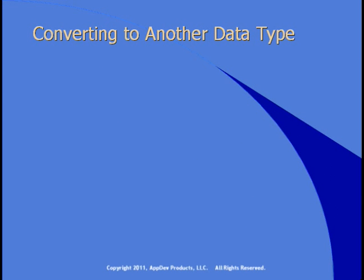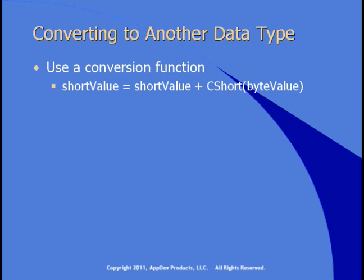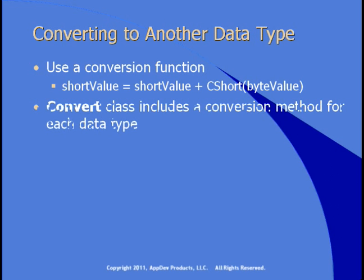Let's look at three ways that you can convert one data type to another in your code. First, you can use a conversion function. Conversion functions are part of the Visual Basic language and there's one for each data type. So in this line of code, we have two variables — one's a short, one's a byte — and we want to add them together. Using CShort and passing in the byte value will convert that byte to a short, and then you can do the math adding the two shorts together. The next option is to use the Convert class, which is in the .NET framework. That class provides a conversion method for each data type. So in this code, we want to convert a variable that's a long to a single. We use Convert.ToSingle and pass to it the long variable, and this converts the long to a single.